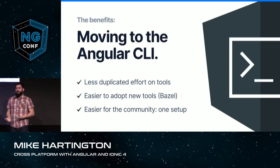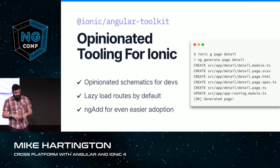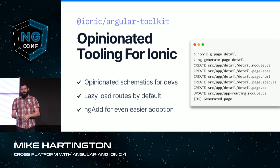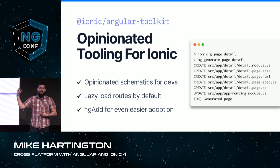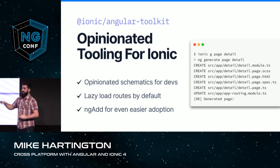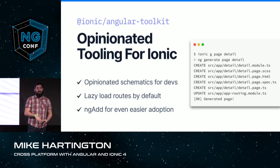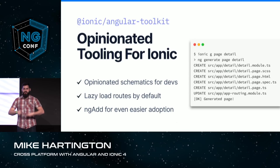We have opinions about how certain things should be done in Ionic, so that's where we created the idea of an Angular toolkit. It's essentially a collection of custom builders and schematics that fit an Ionic and mobile app experience. Lazy loaded components by default. It can handle your native builds for iOS and Android. And it even has an ng-add option, so if you want to incrementally adopt Ionic into your already existing app, just run ng-add @ionic/angular and it'll handle all that for you.